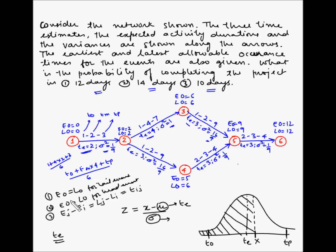For activity 1-2: the tail event has EO = 0 and LO = 0, so condition 1 is met. The head event has EO = 2 and LO = 2, so condition 2 is met. For condition 3, EJ minus EI = 2 minus 0 = 2, and LJ minus LI = 2 minus 0 = 2, which equals Te = 2. All three conditions are met, so activity 1-2 is a critical activity.